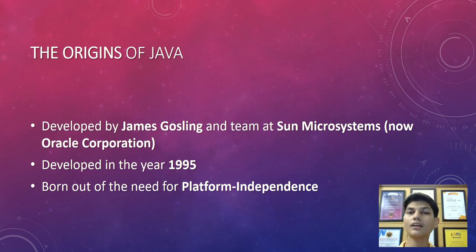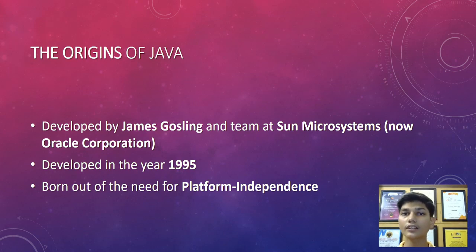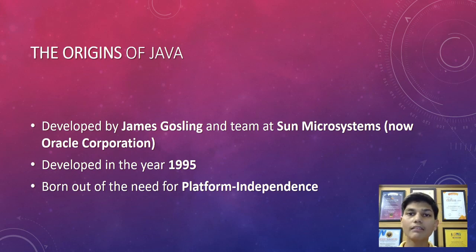Java is platform independent. If you develop a Java program in Windows, you can run it on Mac OS and on Linux as well — without even needing to recompile it. This is done with the help of the JDK, the Java Development Kit. Just having that kit, we can develop and run programs from one OS or one hardware to another. That is how Java achieves platform independence, and this is a huge reason why it is still popular.